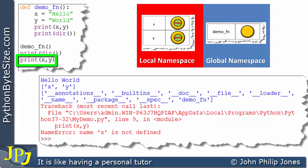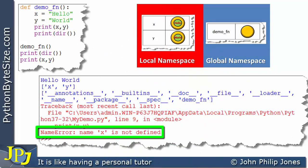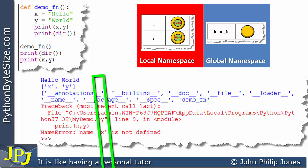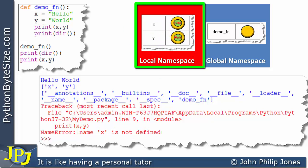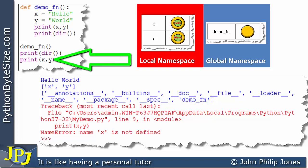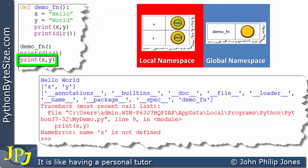When the next line attempts to execute, we get an error: 'name x is not defined'. If we allowed execution to continue it would tell us y is also not defined. The name x is defined, but only in the local namespace. As we've seen in this series, the global area of the code cannot gain access to the local namespace — x and y belong to the function's local namespace, so they cannot be reached from the global area.